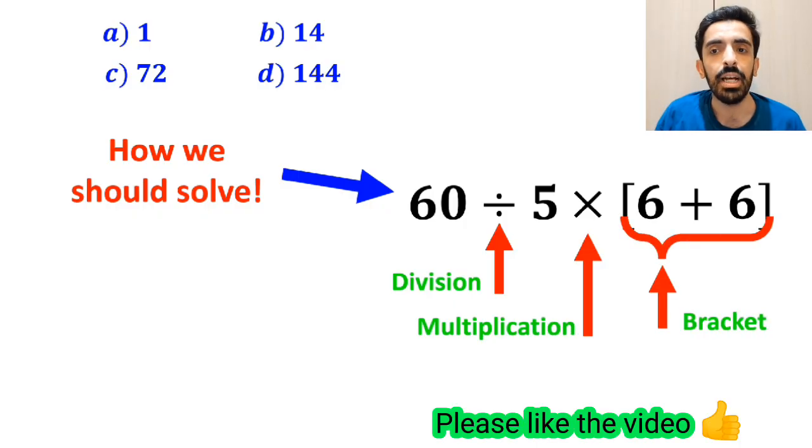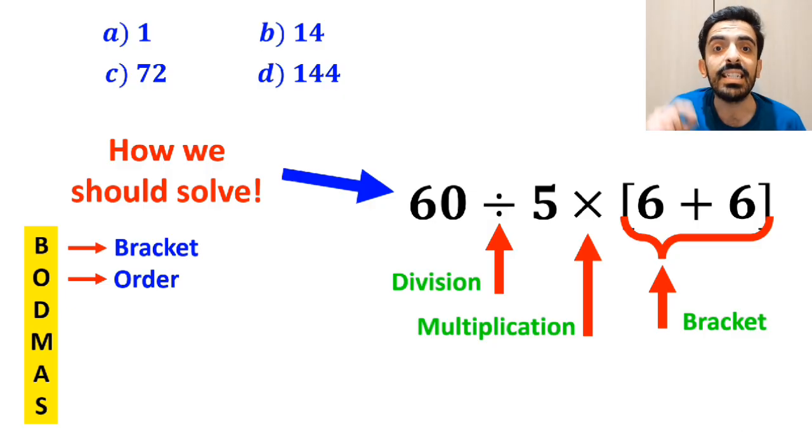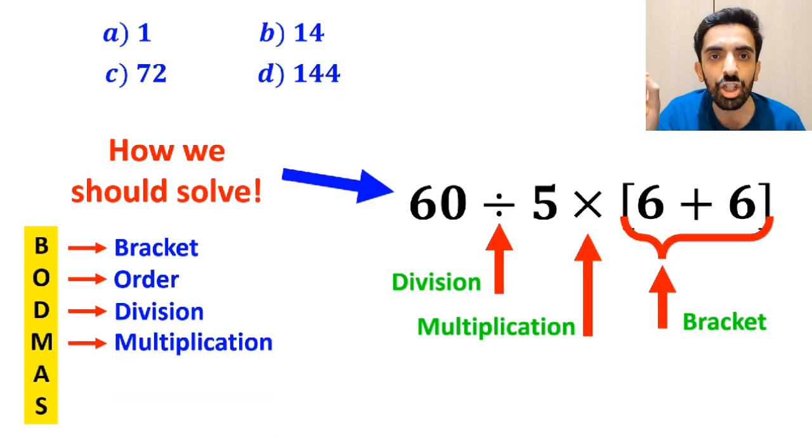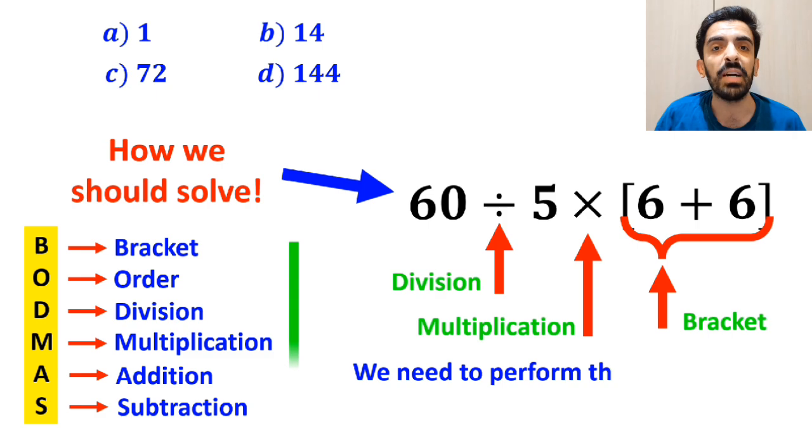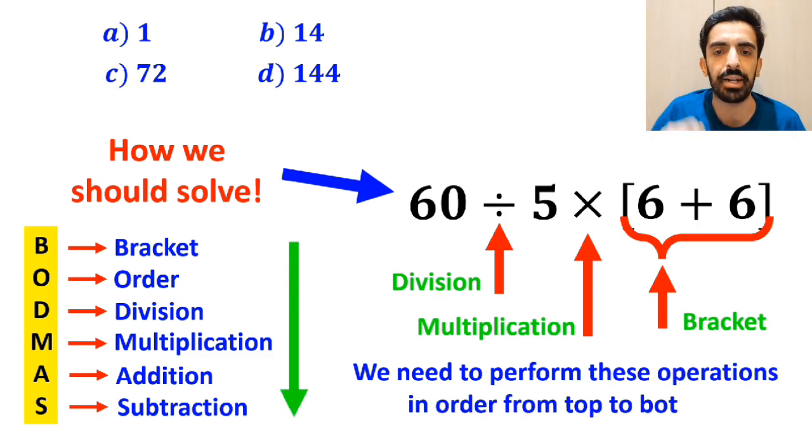To solve this expression, we need to use the BODMAS rule. In this rule, B stands for bracket, O stands for order, D stands for division, M stands for multiplication, A stands for addition, and S stands for subtraction. We need to perform these operations in order from top to bottom.